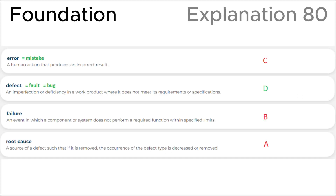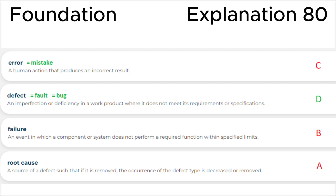Explanation. First, let's look at the definitions in the ISTQB glossary. Error or mistake is a human action that produces an incorrect result. Defect, fault, or bug is an imperfection or deficiency in a work product where it does not meet its requirements or specifications. Failure is an event in which a component or system does not perform a required function within specified limits. A root cause is a source of a defect such that if it is removed, the occurrence of the defect type is decreased or removed.